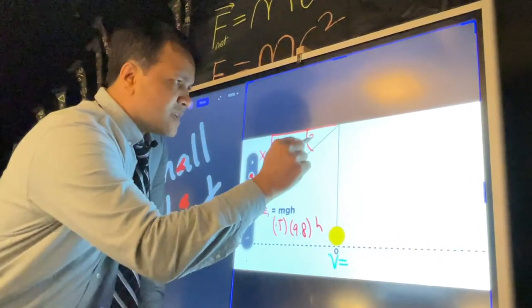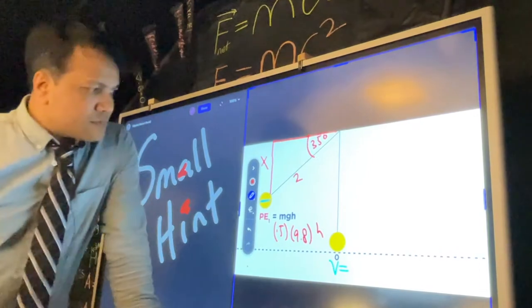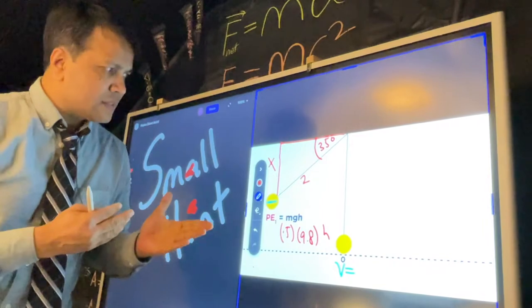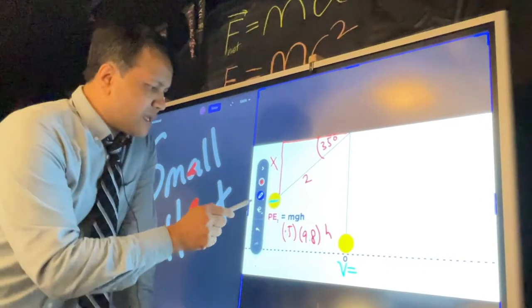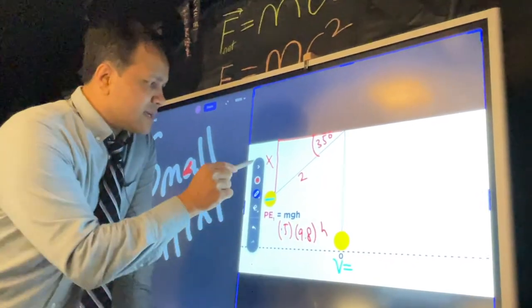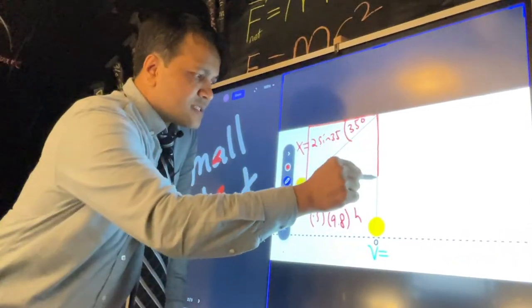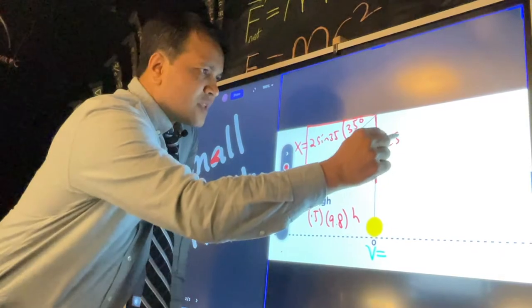This is 35 degrees, right? So good. Now if this is 35 degrees and this is 2, then what is this one? This one must be, if you use SOHCAHTOA, then x must be 2 sine 35. Then this one is still has to be 2 sine 35.